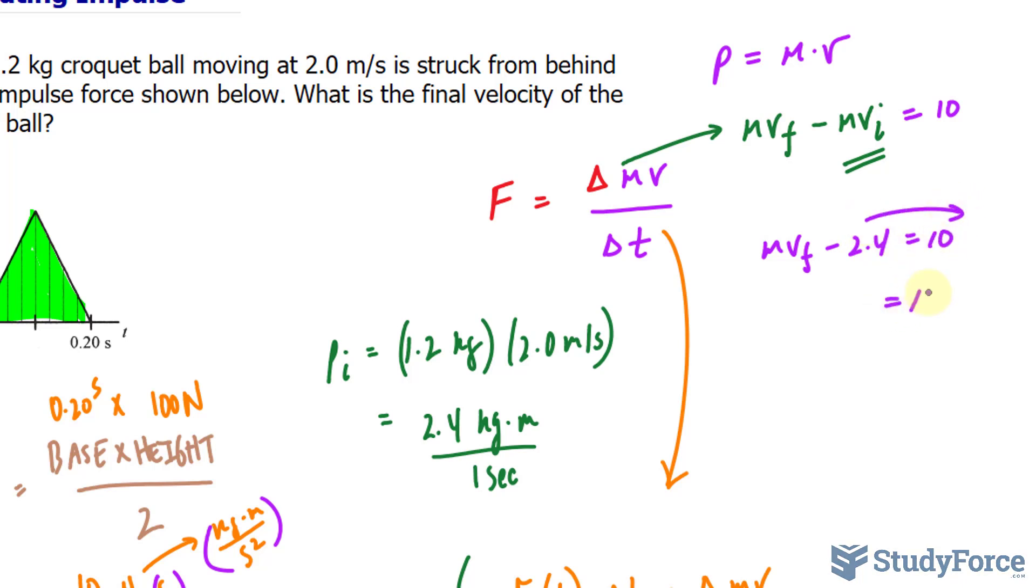Rearranging, 10 plus 2.4. This means that the final momentum, MV, is equal to 12.4 kilograms times meters per second.